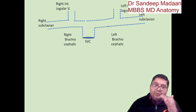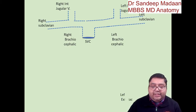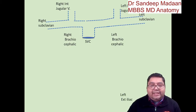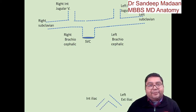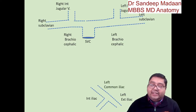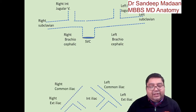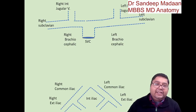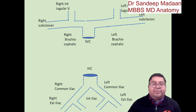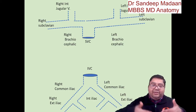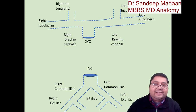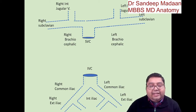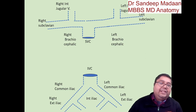Lower down, we have a vein coming from the lower limb — the external iliac vein — and from inside the pelvic cavity we have the internal iliac vein. They unite to become the common iliac vein, on both left and right sides. When both left and right common iliac veins come up, they make the IVC. So the lower limb veins and pelvic veins form the common iliac, and two common iliacs make the IVC.